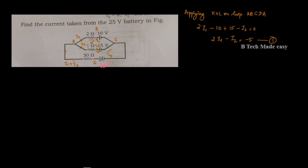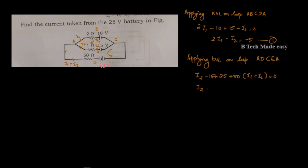This is the next loop we will consider — applying KVL on loop ADCEA. That is the I2 loop: I2 minus 15 plus 25 plus 50I1 plus 50I2 is equal to 0. That gives us 50I1 plus 51I2 equals minus 10, which is the second equation.